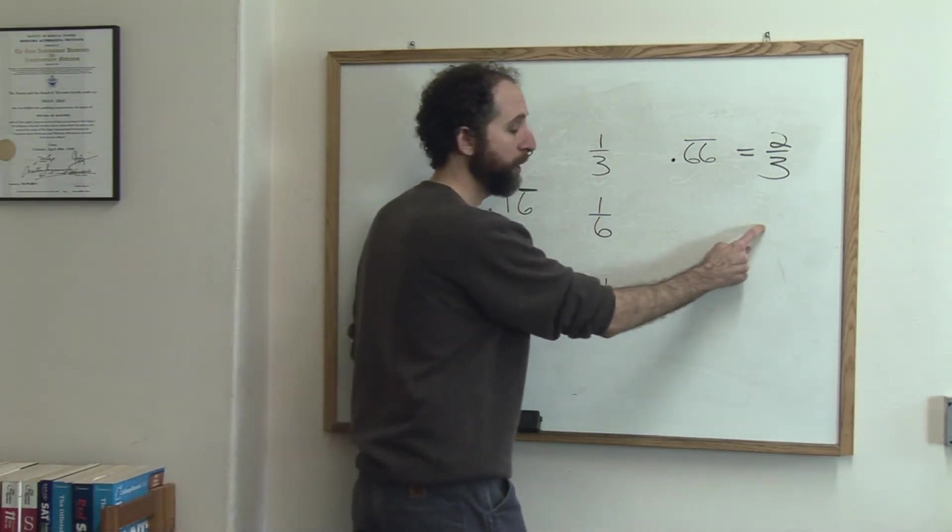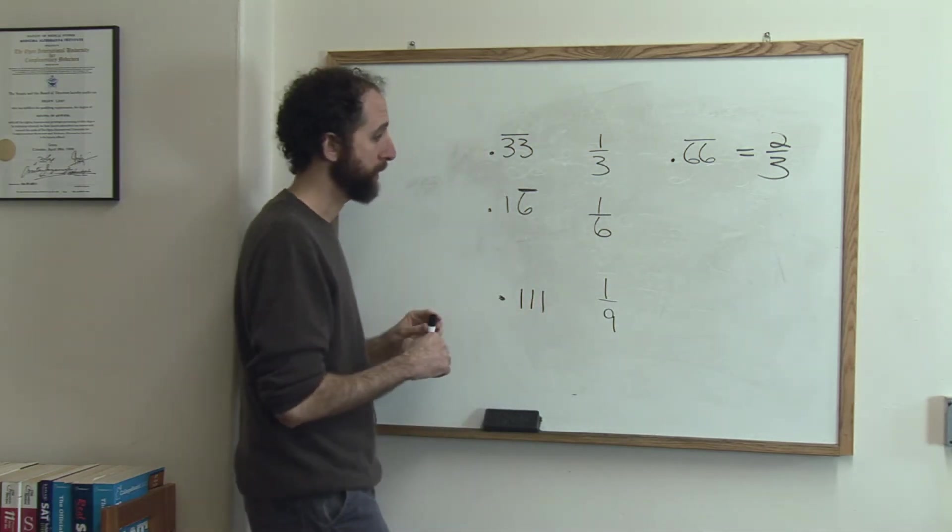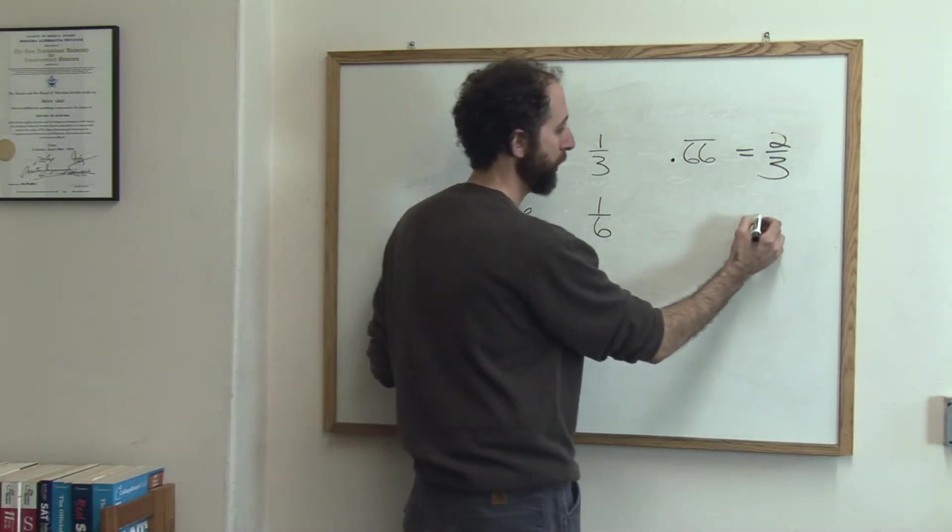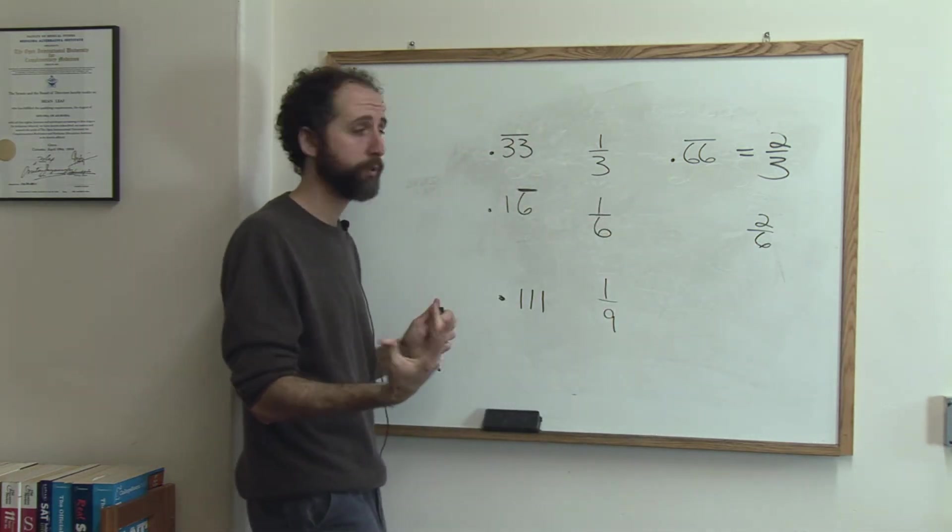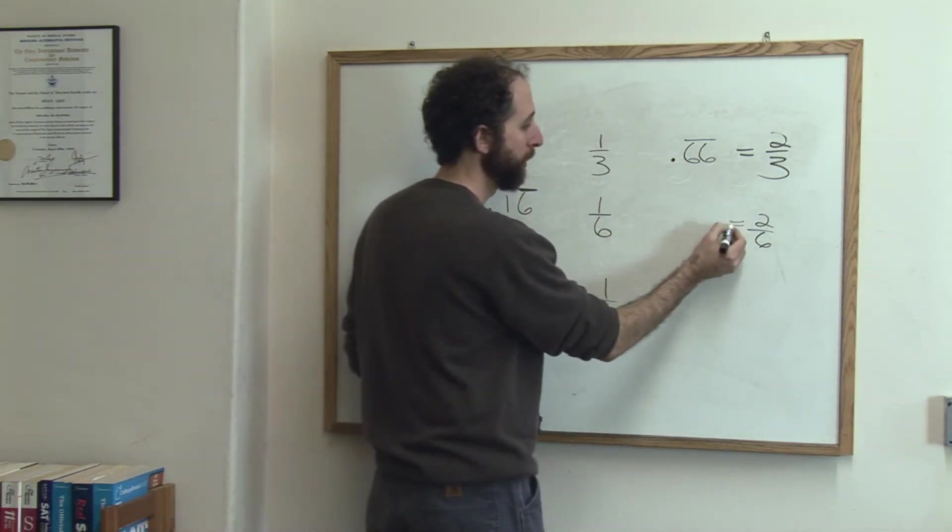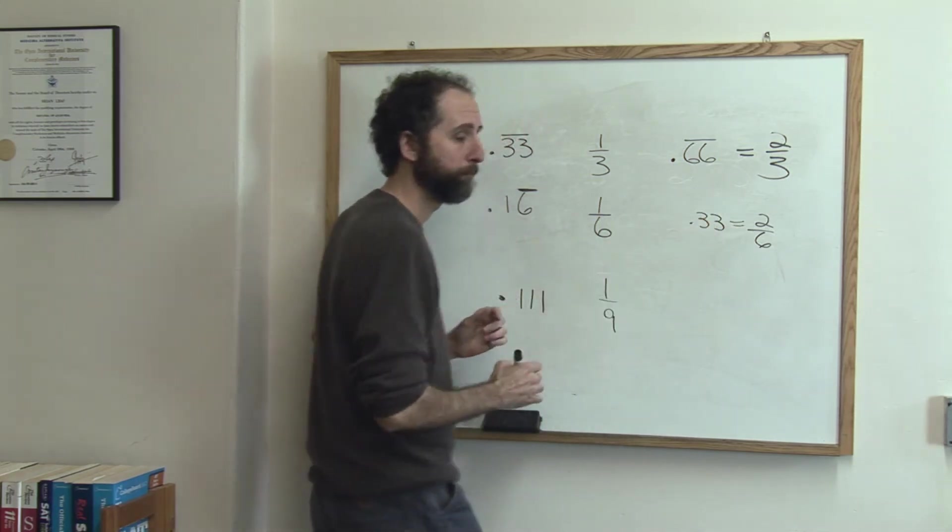Now you actually don't need to memorize the doubled one on this, because one-sixth doubled is actually two-sixths, which is one-third. So two-sixths reduces to one-third, and that's why two-sixths is .33 repeating.